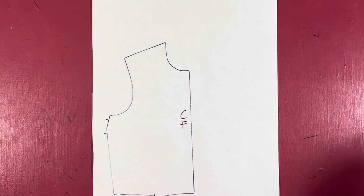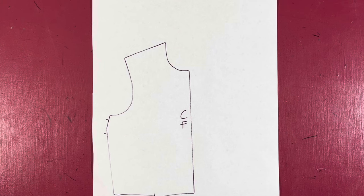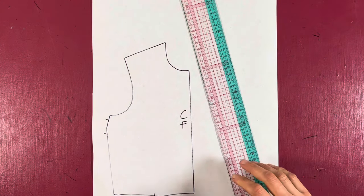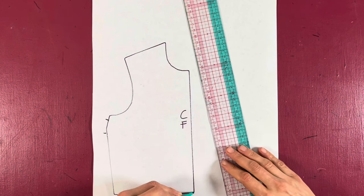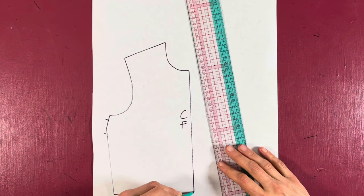for this. Just make sure to take off the seam allowance. The first thing we're going to draw in is our normal shawl collar drafting, which means we're going to draw in our break point. I'm going to draw mine in right at the waist, and from there we're going to draw a fold line to the high shoulder point.